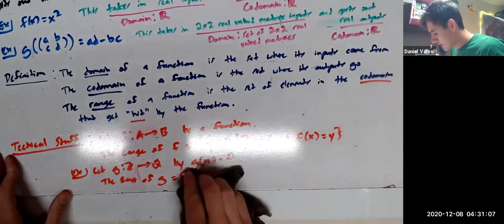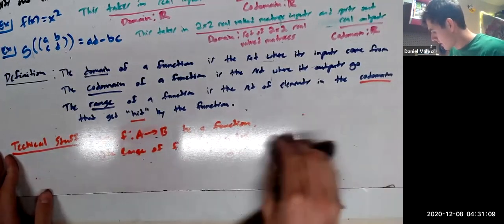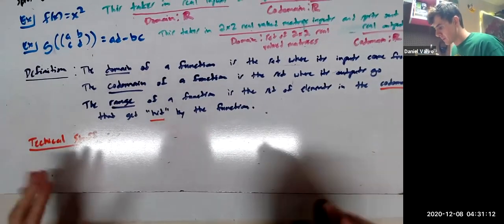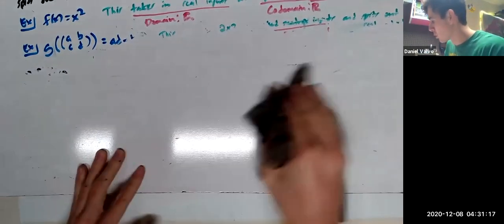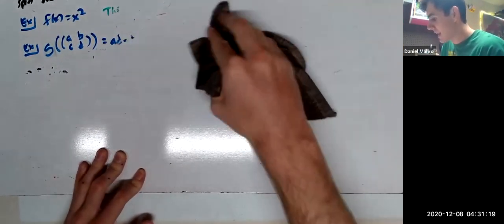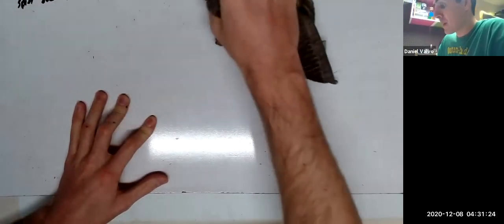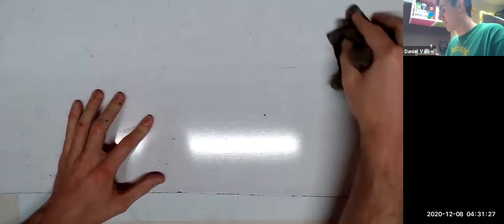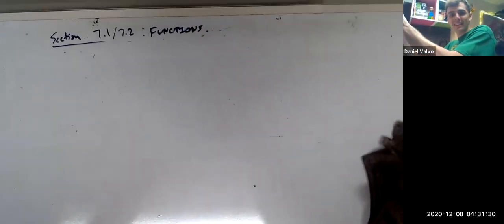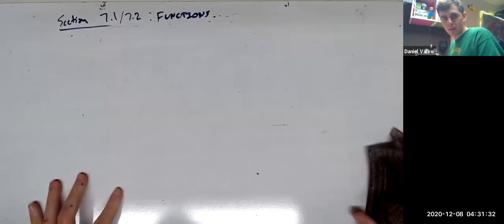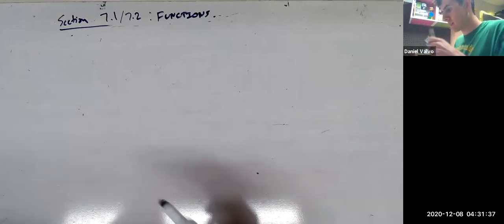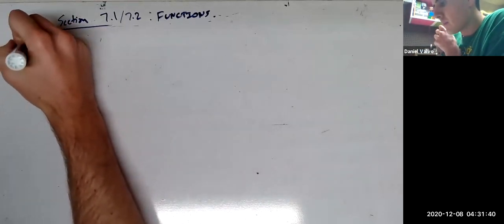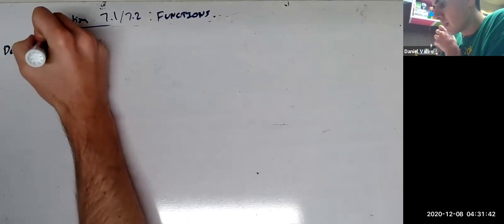But before we leave, let's get three definitions down that are important, and we'll talk about it more next time too. So all of this we've been doing today has been using what I've been calling the middle school definition, and next time we'll talk about the more mathematical, broader definition that really gets more of the point. So, definitions.